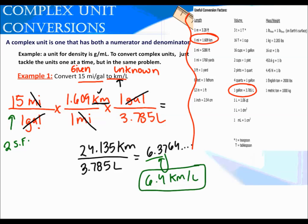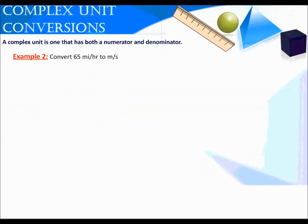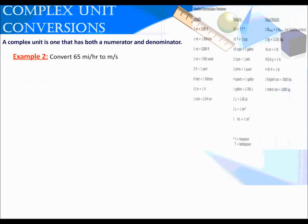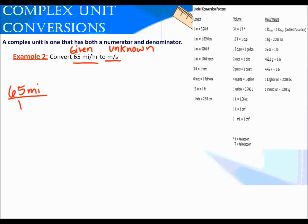Let's try another one. In my second example, I'm going to convert 65 miles per hour to meters per second. Again, I don't have all these conversion factors memorized, so I'm going to use my reference list. My given is the one that has the number. My unknown is just a unit here. I'm going from miles per hour to meters per second, one unit at a time. Start with 65 miles over one hour.